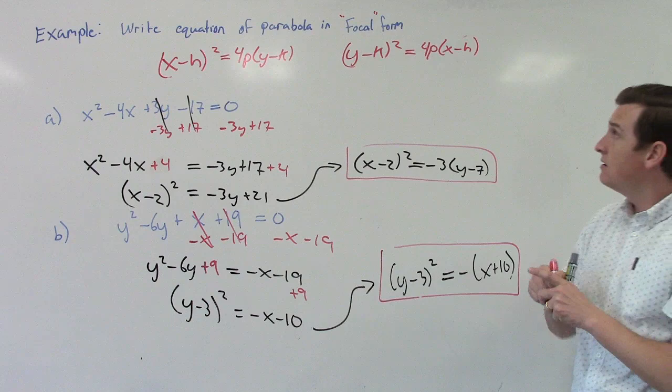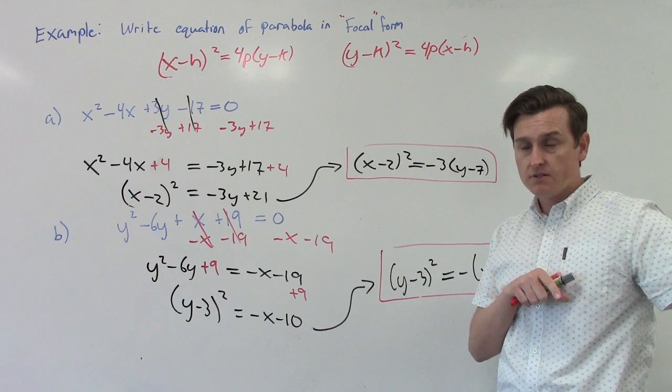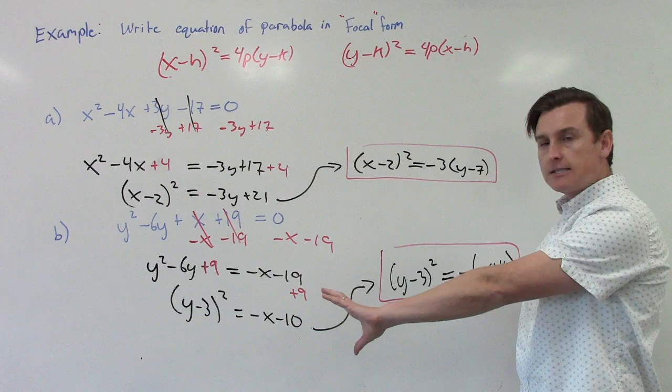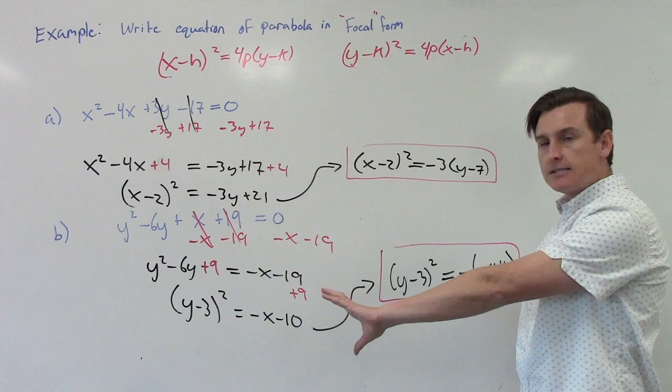So both of these are now in focal form. Very similar to the first example we did with a circle, but now we're doing the same idea with parabolas. The process: figure out what the squared variable is, get everything else away from it, complete the square, factor the left-hand side, factor the right-hand side, and then you're good to go.